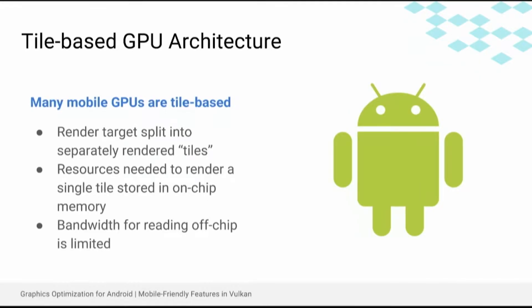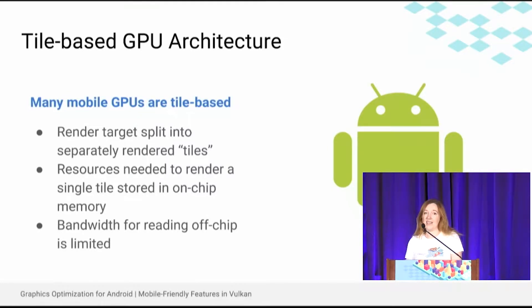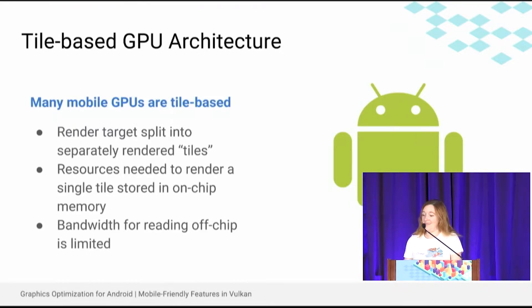Not all mobile GPUs are tile-based, but most are. This means that the render target is split into separately rendered tiles, so the GPU can keep resources needed to render a single tile stored in on-chip memory, which is fast and inexpensive power-wise to access. The flipside of this is that bandwidth for reading off-chip is limited.